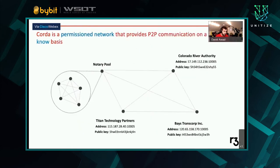Corda is a permissioned network. It communicates on a peer-to-peer basis and on a need-to-know basis. So let's say you are Titan Technology Partners and someone else is Colorado River Authority. Each of you has your keys and addresses, and you have the ability to communicate with each other and represent digital assets that you're tracking together, knowing with confidence that the blockchain is not going to be manipulated by any of the parties, even if you distrust them. In any typical Corda network, you have the notary pool operating alongside you to validate the transactions.